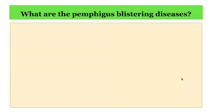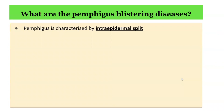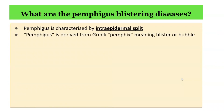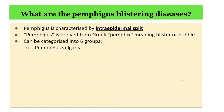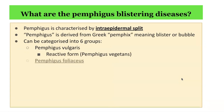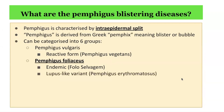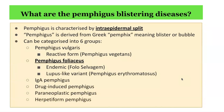Let's recap what the Pemphigus blistering disorders are. Pemphigus is characterized by an intra-epidermal split in the skin. Pemphigus is derived from the Greek word pemphix, which means blister or bubble. It can be categorized into 6 groups, including Pemphigus vulgaris — discussed in part 2 — and its variant Pemphigus vegetans. There's Pemphigus foliaceus, today's topic, with variants including an endemic form called Fogo Selvagem and a lupus-like variant called Pemphigus erythematosus. There is also IgA Pemphigus, drug-induced Pemphigus, paraneoplastic Pemphigus, and herpetiform Pemphigus.